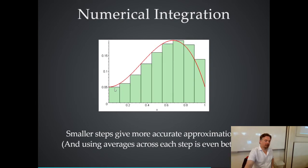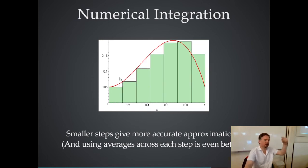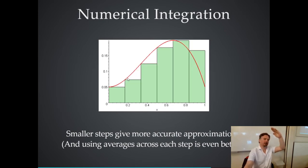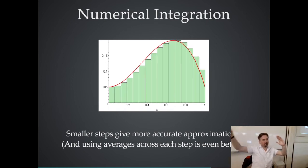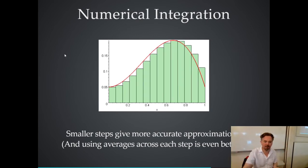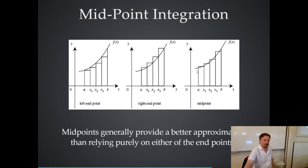The smaller your time steps, the more accurate your answer — at least with this technique, which calculates area using the value at the beginning of each interval. But if instead you took the average between the start and end of each time step — so the rectangles become wedge shapes — that becomes a much better approximation. In fact, if you do it that way, you can get the same answer even with different time steps. There are different approaches: use the value at the start, use the value at the end, or use the midpoint — the midpoint is the most accurate one.